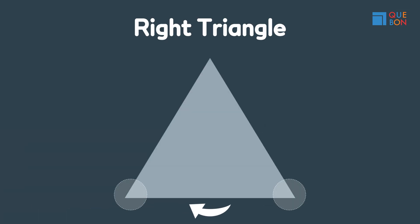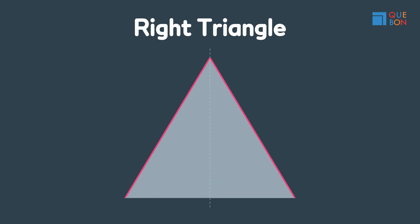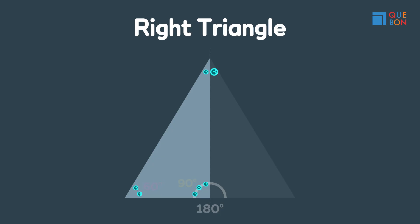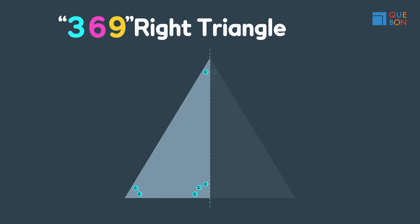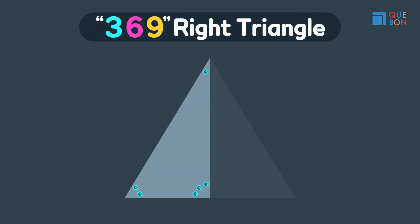Since we folded it in half, the two edges overlap and this edge was halved. Of course the angle is 90 degrees because we folded it in half. This angle is 60 degrees, and these angles are 30 degrees each because we folded 60 degrees in half. A triangle created by folding an equilateral triangle is called a 30-60-90 triangle.